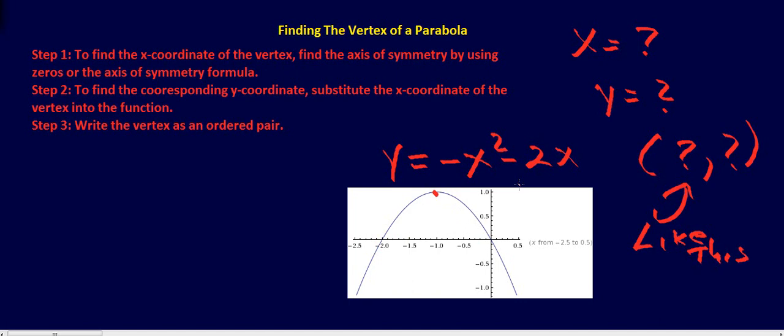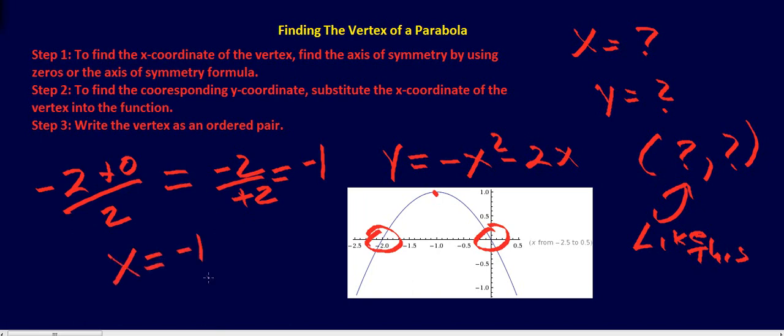So we know that whatever we get for this vertex, this graph can't be bigger than that. So let's figure it out. We know there are zeros. So you've got negative 2 plus 0 divided by 2. This is going to give us negative 2 over positive 2, which gives us negative 1. So we know x is equal to negative 1, and that makes sense.